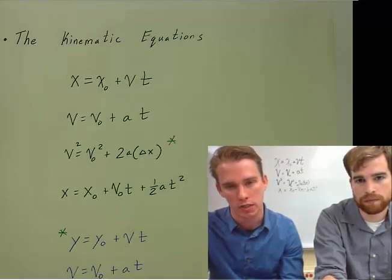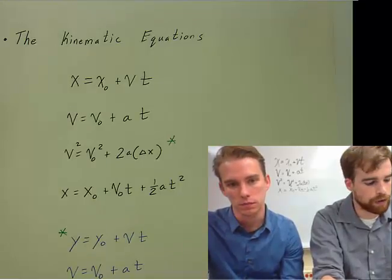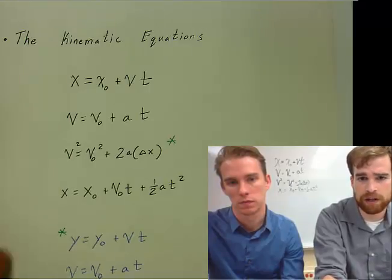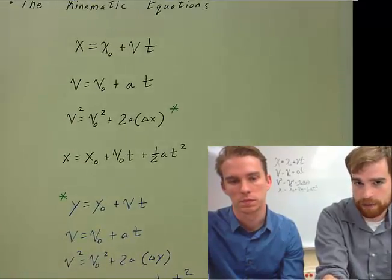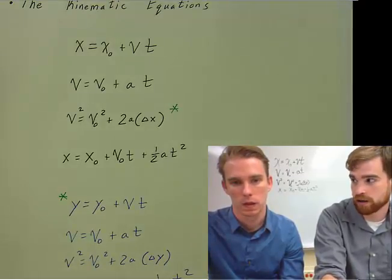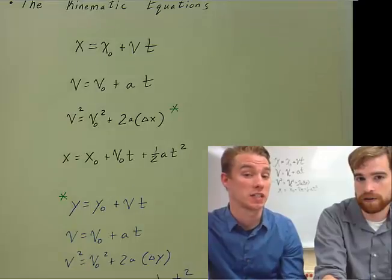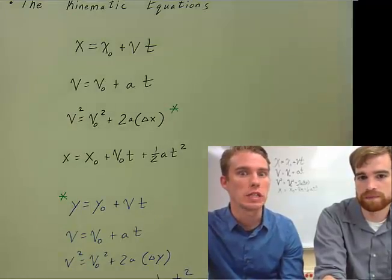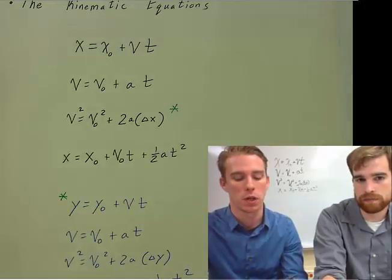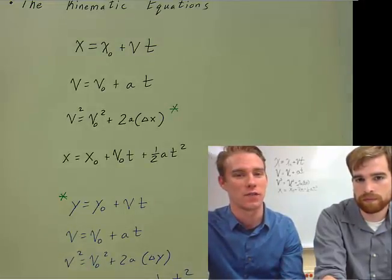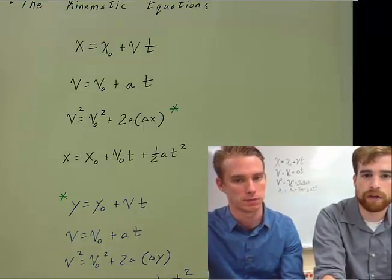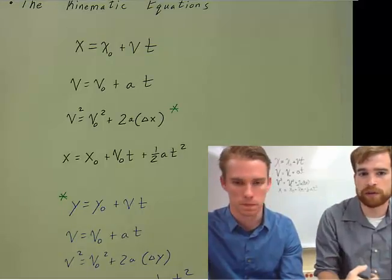The velocity equation is v = v₀ + at. This is when your acceleration is a constant value. This is helpful - you'll notice there's no position in that equation. So when you're asked for position, you don't use that equation. And if you're asked for initial or final velocity, you wouldn't use the first equation.